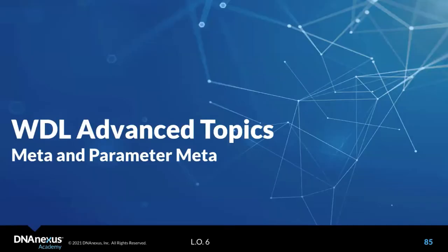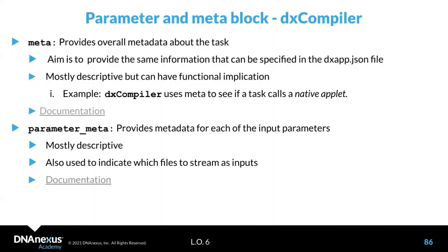Now we'll talk about meta and parameter meta — specifically how to leverage them in UK DRAP. As a recap: meta provides overall metadata about the task, such as last date of revision, who made it, and email. Parameter meta provides metadata for input parameters, like help messages explaining what a parameter means. On UK DRAP, we use meta to indicate a task calling a native DNAnexus applet, and parameter meta to identify that we don't need to download a file — we just need to stream it.